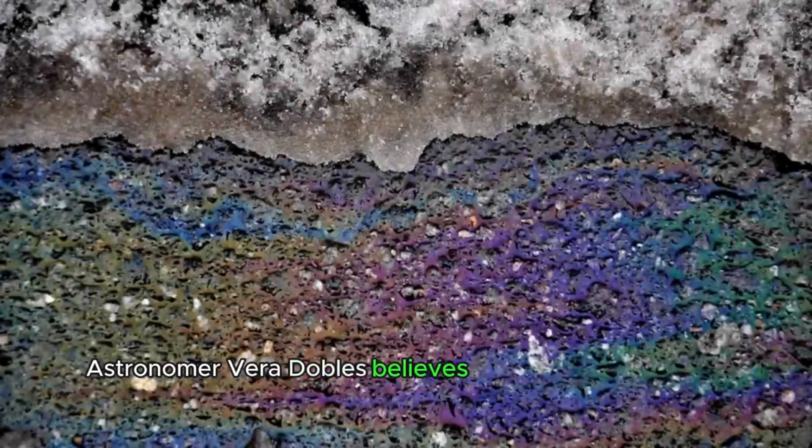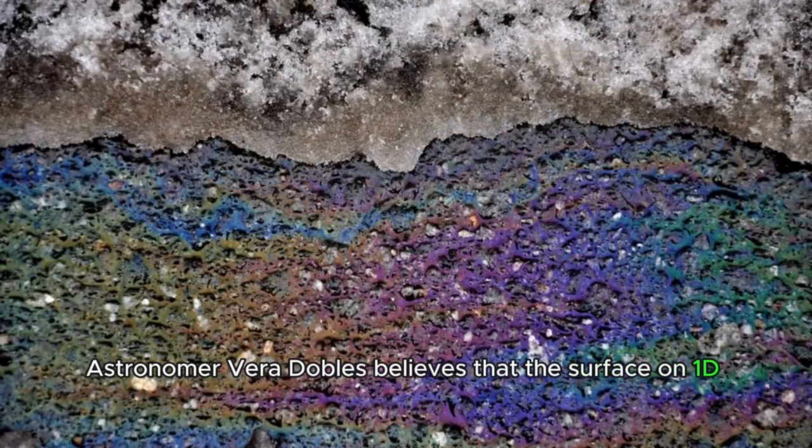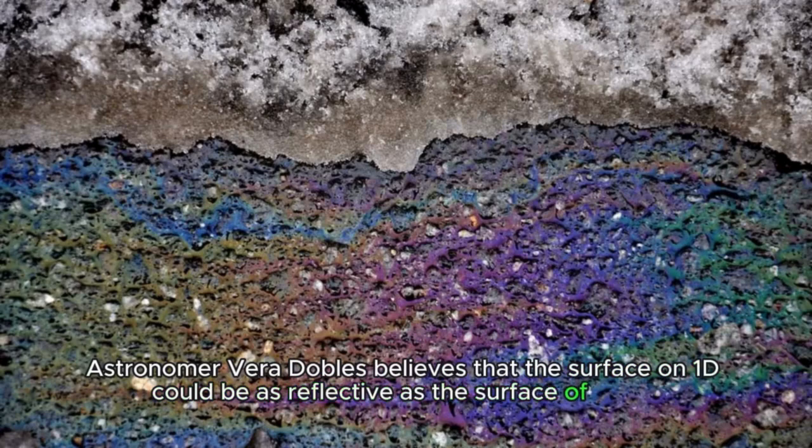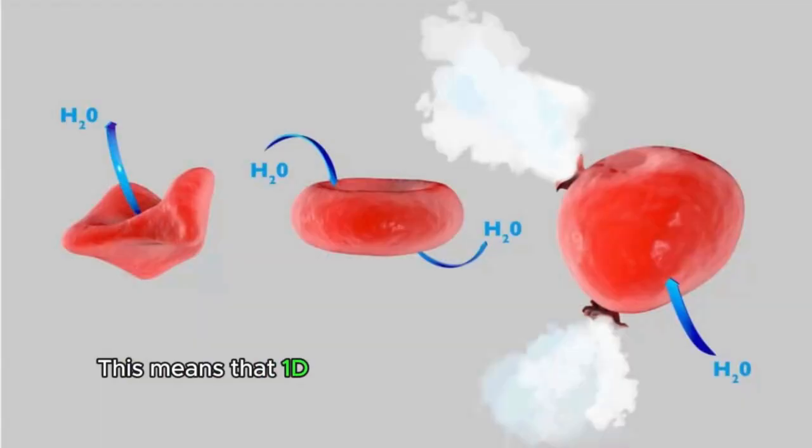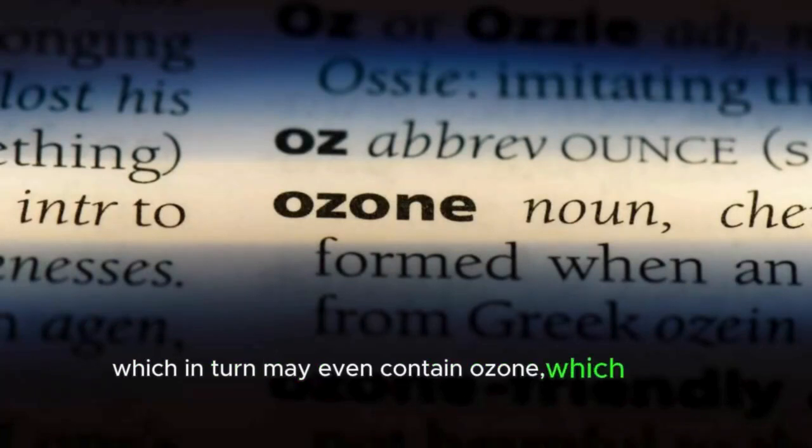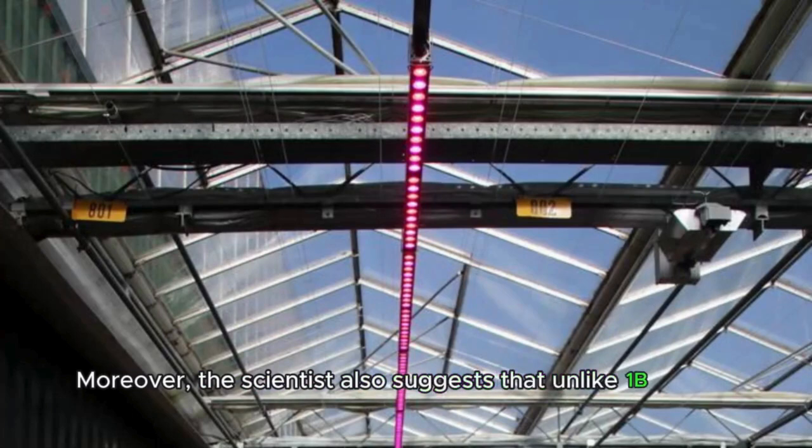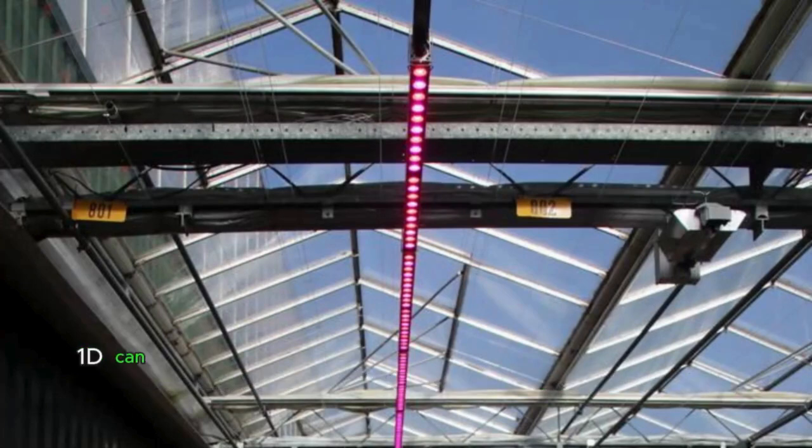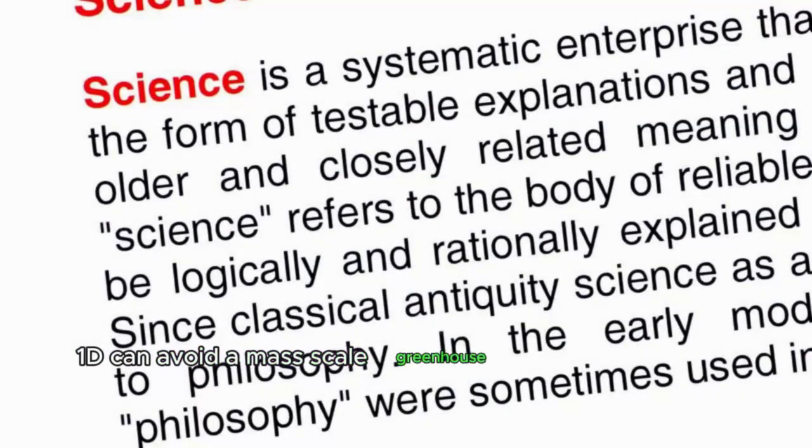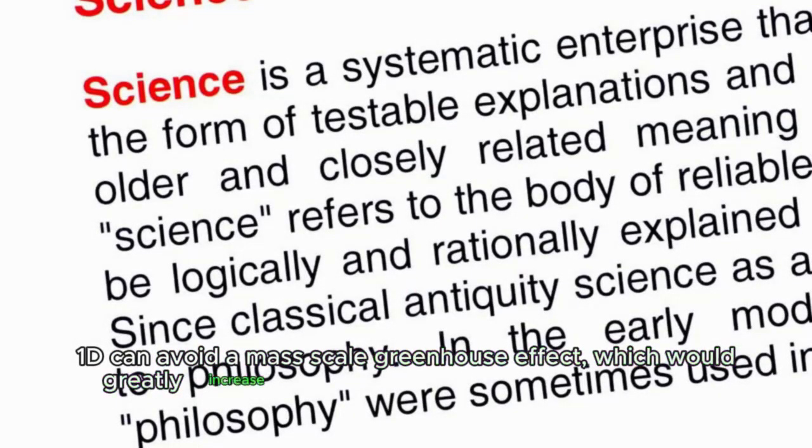Astronomer Vera Dobles believes that the surface on 1d could be as reflective as the surface of Earth. This means that 1d may have liquid water and a dense atmosphere, which in turn may even contain ozone, which would protect the planet against harmful radiation. Moreover, the scientist also suggests that unlike 1b and 1c, 1d can avoid a mass-scale greenhouse effect, which would greatly increase surface temperatures due to its small mass.